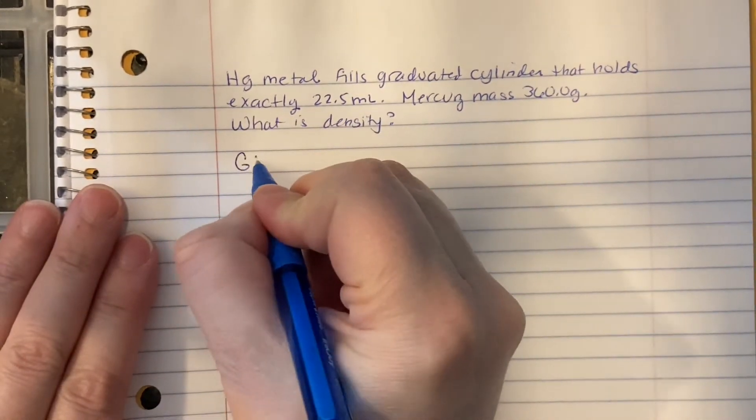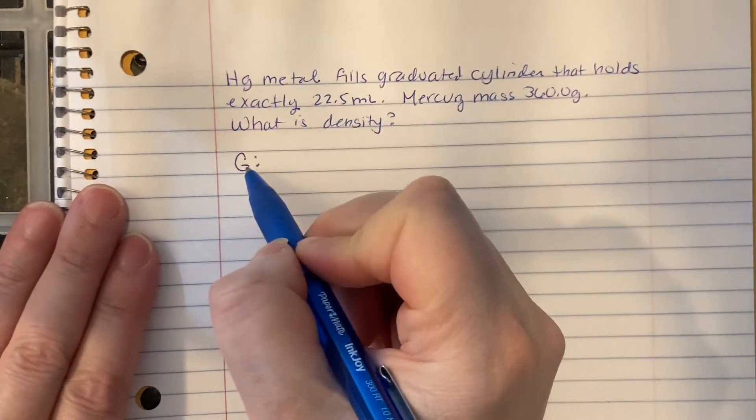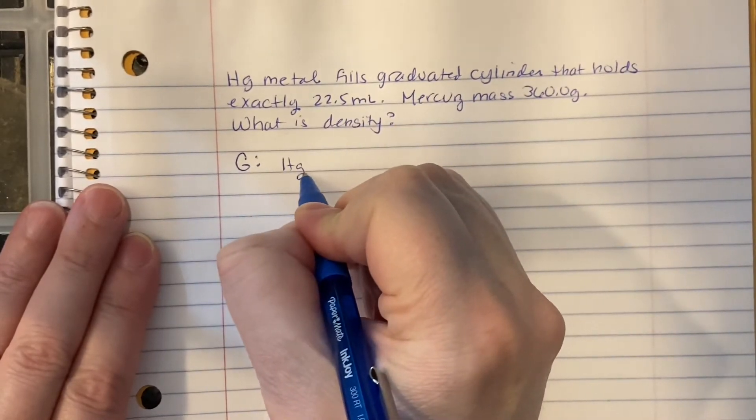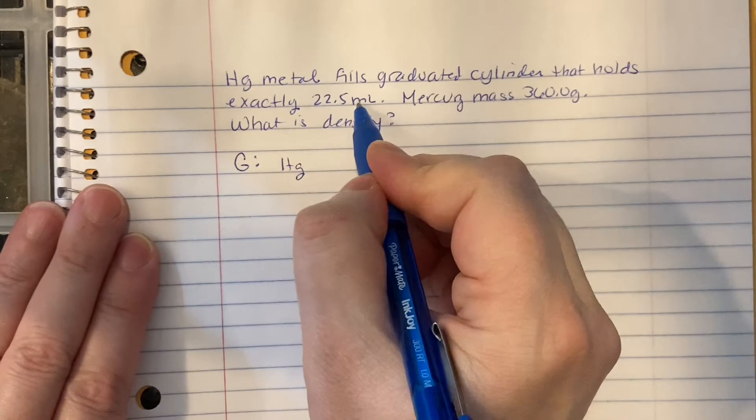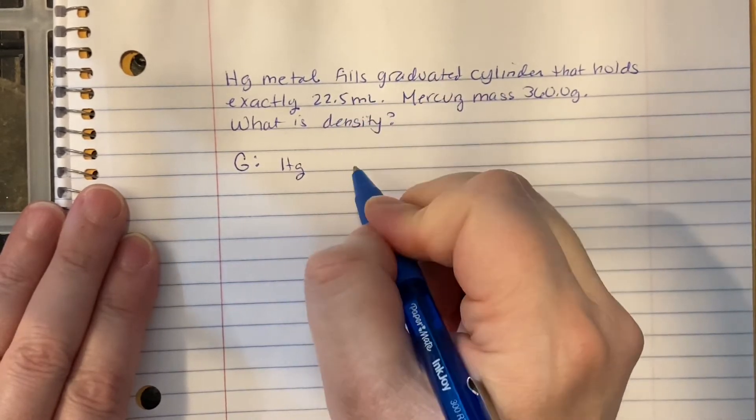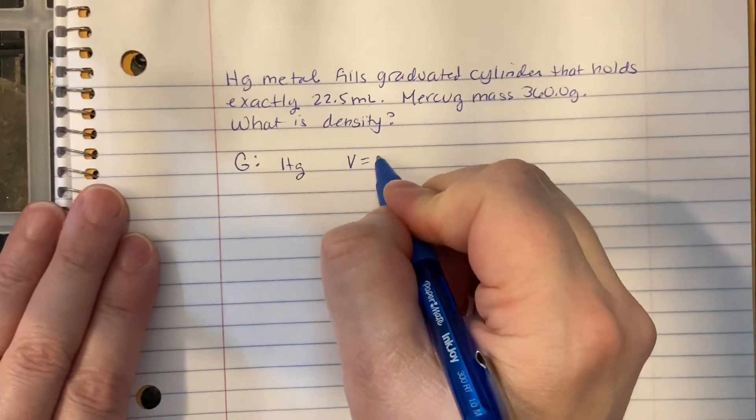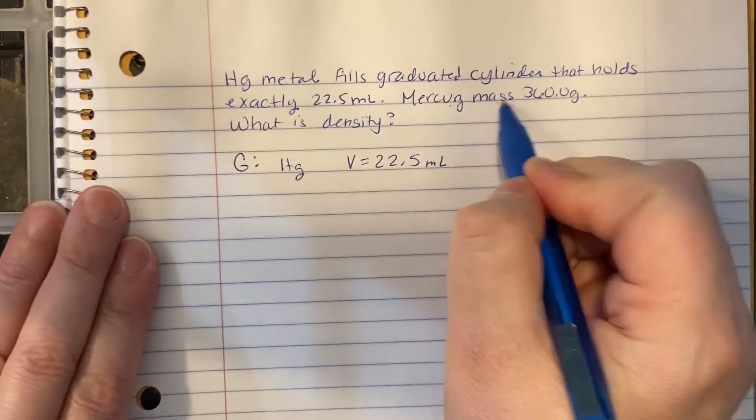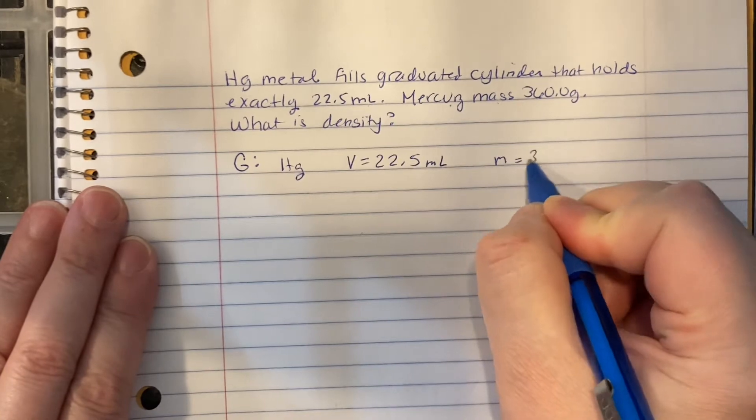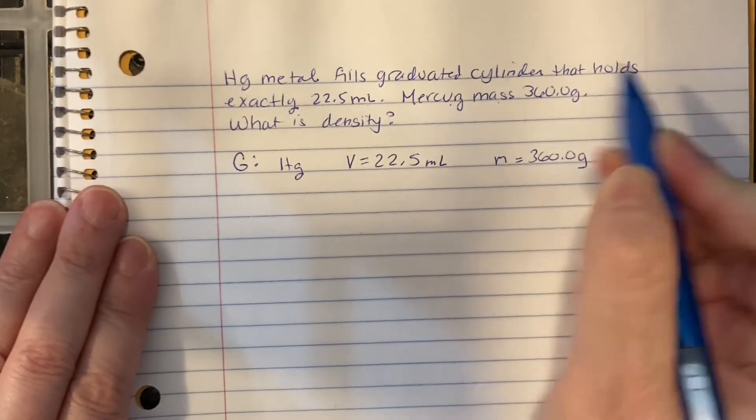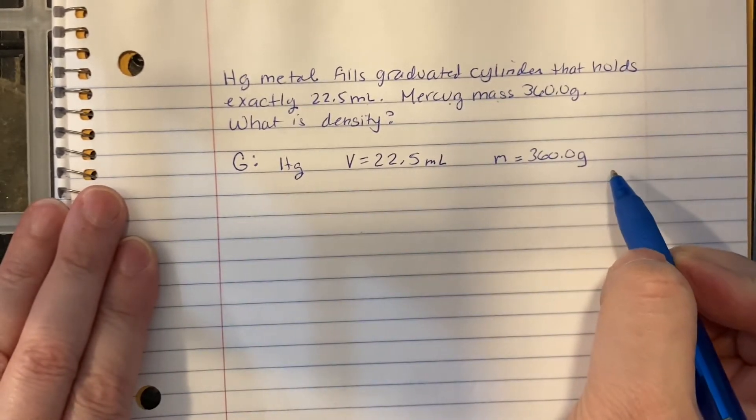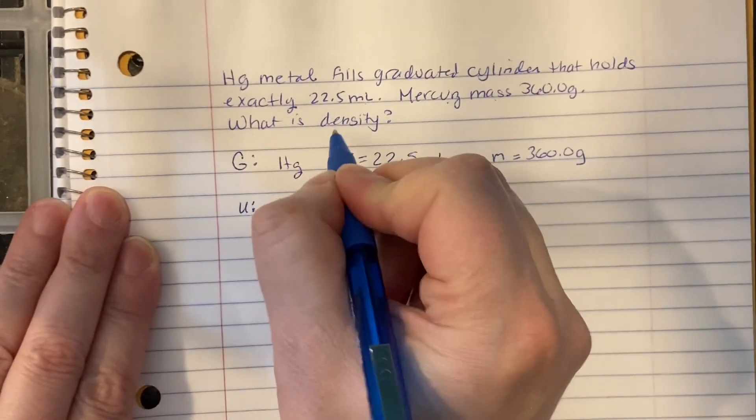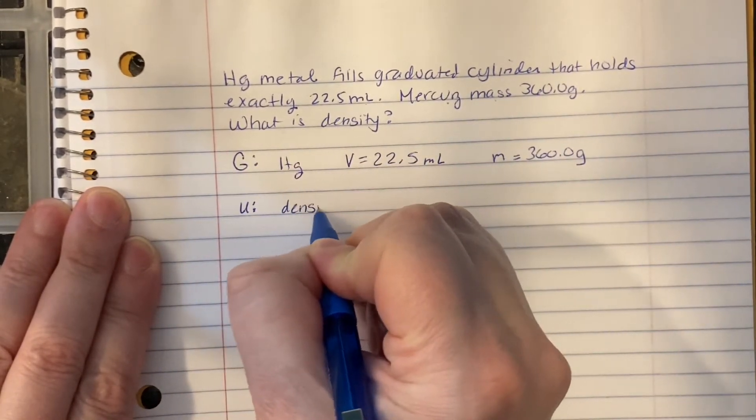So each time you write down what we know. What do we know? What are we given? We know that it's mercury. We know it fills the graduated cylinder, and milliliters is a volume, so we know its volume is 22.5 milliliters. Mercury mass, so its mass is 360.0 grams. So now we've organized what information is important in our G. Unknown is density, because that's what we're trying to find.